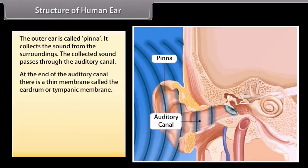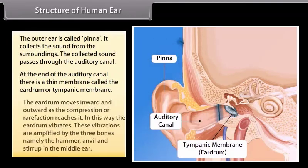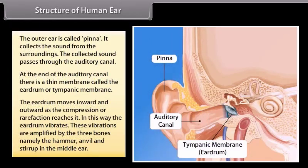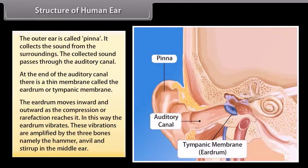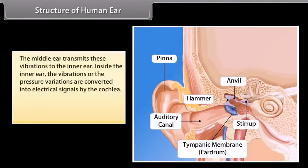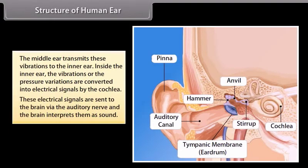At the end of the auditory canal there is a thin membrane called the ear drum or tympanic membrane. The ear drum moves inward and outward as the compression or rarefaction reaches it. In this way the eardrum vibrates. These vibrations are amplified by the three bones, namely the hammer, anvil, and stirrup in the middle ear. The middle ear transmits these vibrations to the inner ear. Inside the inner ear, the vibrations or the pressure variations are converted into electrical signals by the cochlea. These electrical signals are sent to the brain via the auditory nerve and the brain interprets them as sound.